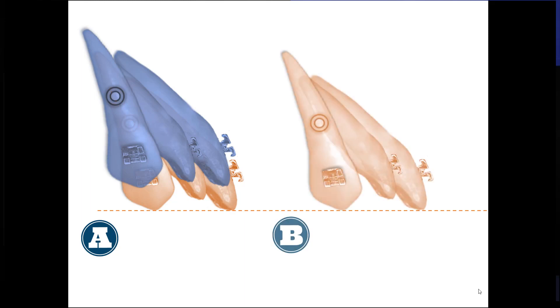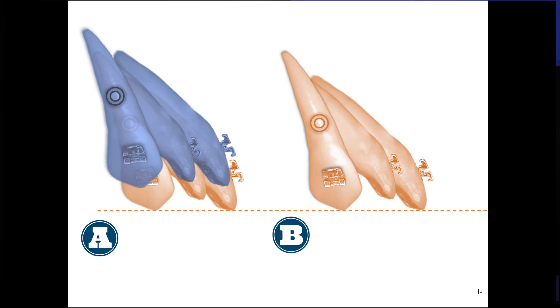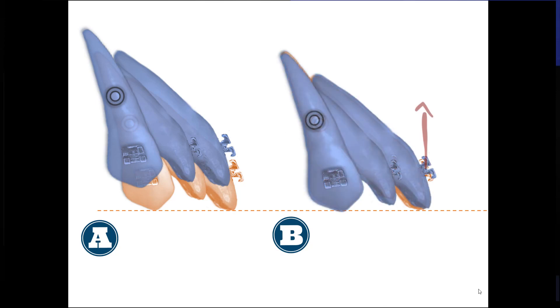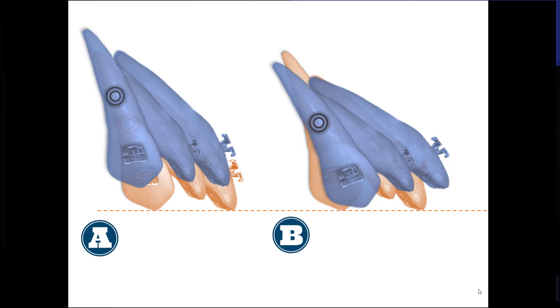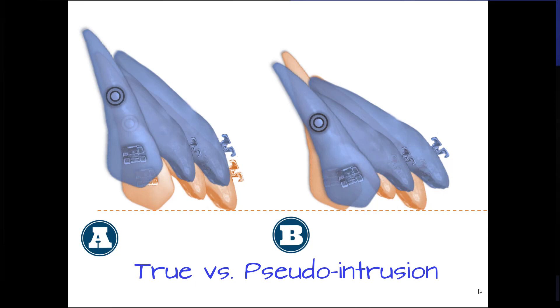On the other hand, in picture B, you can see what happens if an intrusive force is applied at the bracket level. Although the incisal edge and the bracket have moved upwards, the CR has not moved, because in this case the force applied distant to the CR will provoke a significant counterclockwise moment at this region. Therefore, basically a tipping is being produced, which reduces the overbite but increases the overjet. This is called a pseudo intrusion. This is the type of movement that we would achieve if you use a straight wire or a continuous intrusion arch in this case. And this is not our goal.